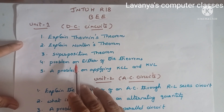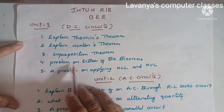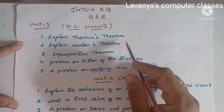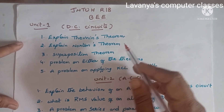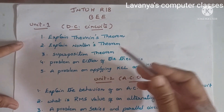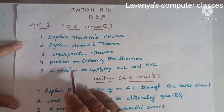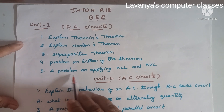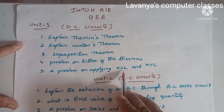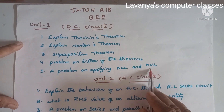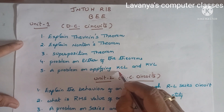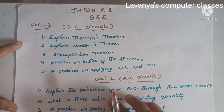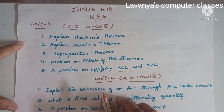We learned the theorems — superposition, Norton's and Thevenin's — and we are getting so many problems from all of them. So, concentrate most on problems. Next is a problem on applying KCL and KVL. BEE is mostly a problematic paper, so concentrate more on problems.